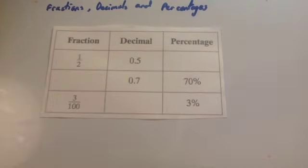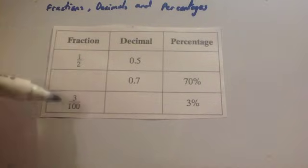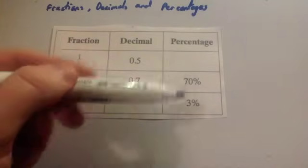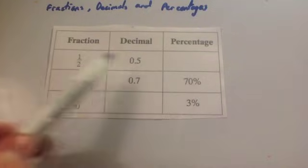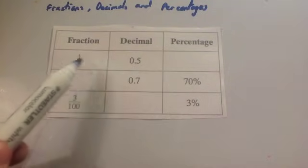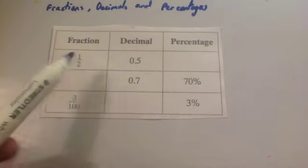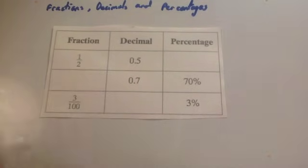So let's have a look at this one to begin with. You've got a table with a column of fractions, a column of decimals, and a column of percentages. Each row would be equivalent. So for instance, a half is 0.5, and you should know this one off by heart, that a half is 50%.